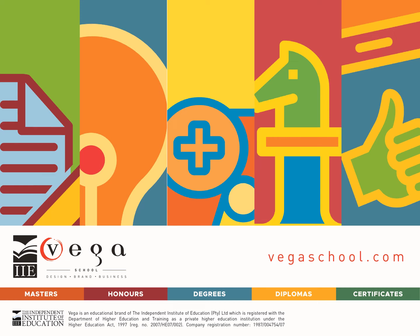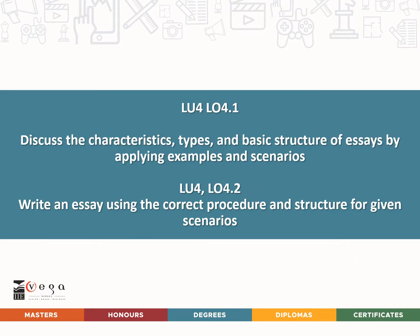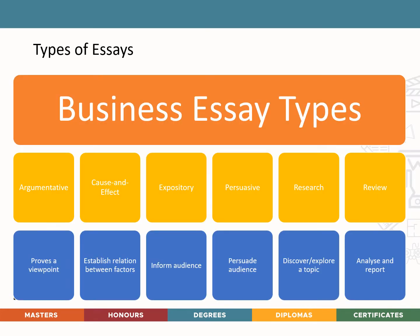Welcome back. Here we go with some essay writing. We are still on the topic of planning your organizational message and communication. The learning units covered in this lesson are learning unit 4.1, which is to discuss the characteristics, types, and basic structures of essays by applying examples and scenarios, and learning unit 4.2, which is writing an essay using the correct procedures and structures for a given scenario.